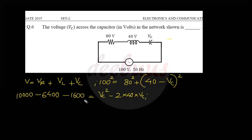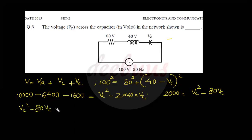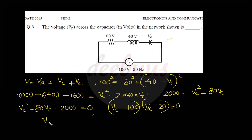Simplifying: 10,000 minus 6,400 minus 1,600 equals 2,000. So 2,000 equals VC squared minus 80·VC, which gives VC squared minus 80·VC minus 2,000 equals 0.